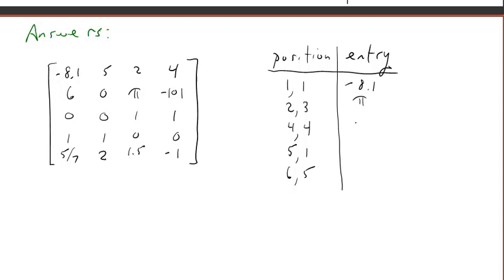4th row, fourth column, 4, 4 position, that's just 0. 5th row, first column, 5, 1 position, it's the number 5 sevenths. 6th row, fifth column: there is no 6th row, so this doesn't exist. That was a trick question.